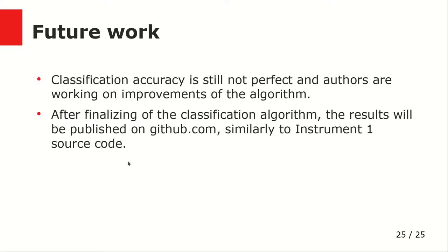To wrap up, we created a multi-label classification tool that can be used to tag questions in a question repository. Accuracy was quite good — using Hamming loss metrics, we got 98% of correctly predicted labels. As future work, we think classification accuracy can still be improved. After finalizing the algorithm, we plan to publish it on GitHub, similar to what we did for the English Stack Exchange data collection tool. Thank you for listening.